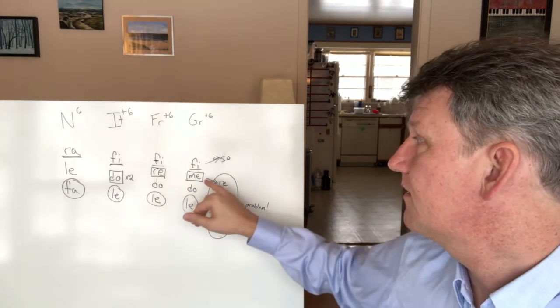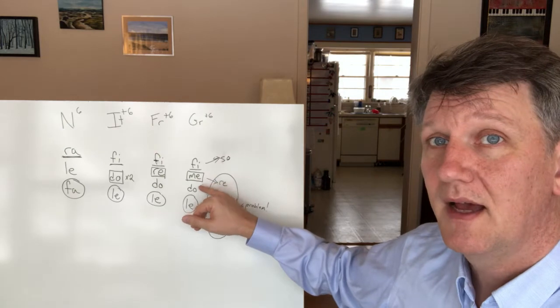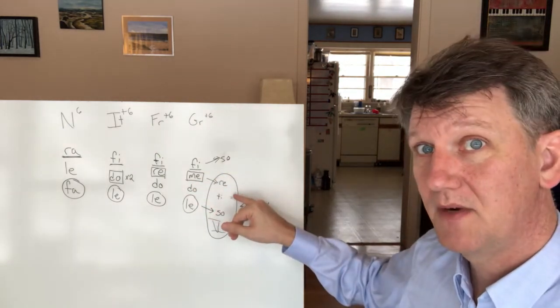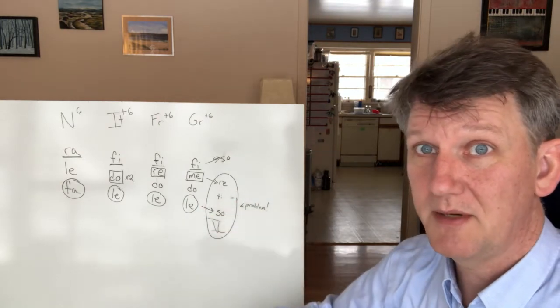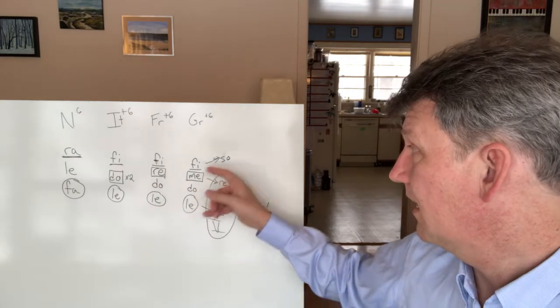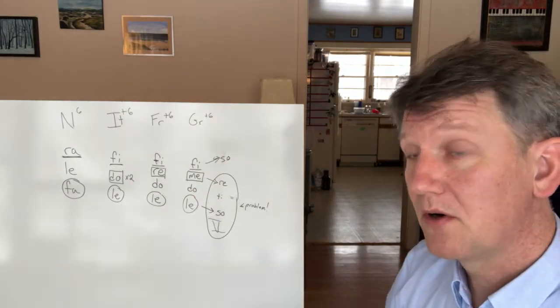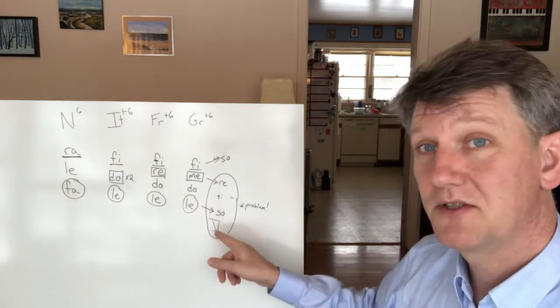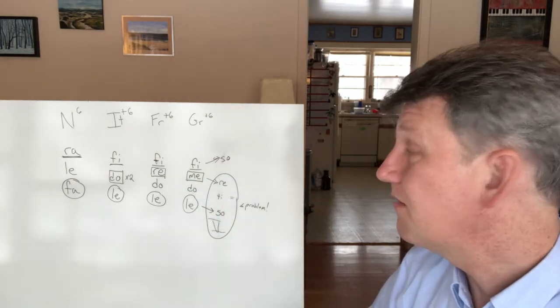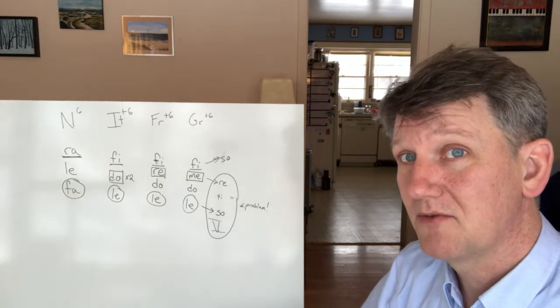But in German, you have Me. And as we discussed, the Me wants to resolve down to Re, but you don't want it to do it right away because that would have parallel fifths. So usually we'll have maybe a cadential six-four, and so the Le can go down to So first, and then the Me can follow. And that way they're not moving at the same time, and therefore we don't lose the independence of the voices.